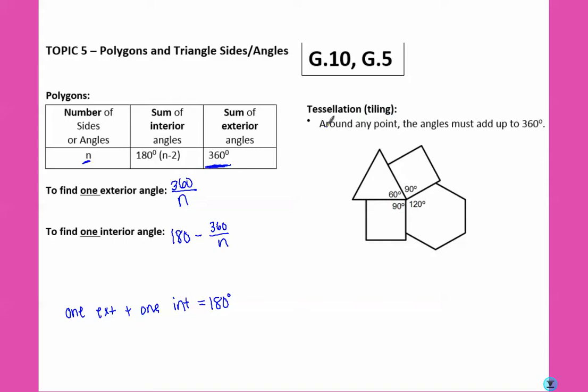For tessellation or tiling around any point, the angles must add up to 360 degrees because basically they make a circle. So let's put this to use.